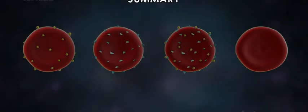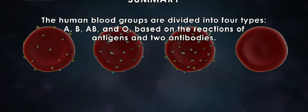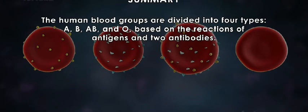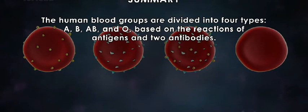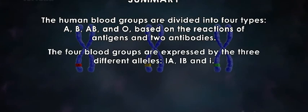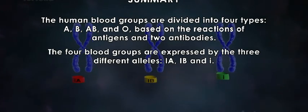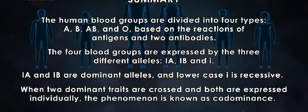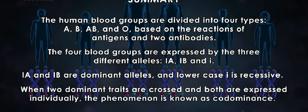Summary: The human blood groups are divided into four types — A, B, AB, and O — based on the reactions of antigens and two antibodies. The four blood groups are expressed by three different alleles: IA, IB, and I. IA and IB are dominant alleles, and lowercase I is recessive. When two dominant traits are crossed and both are expressed individually, the phenomenon is known as co-dominance. Human blood groups are inherited through co-dominance.